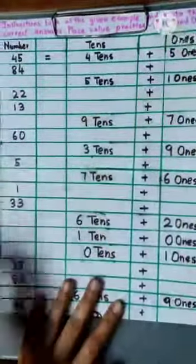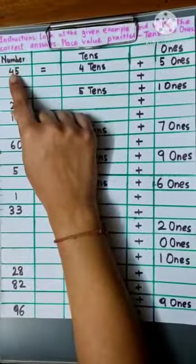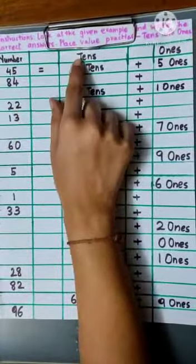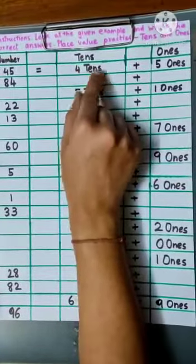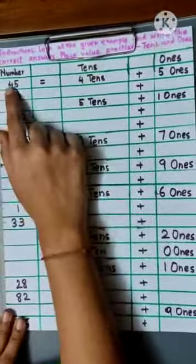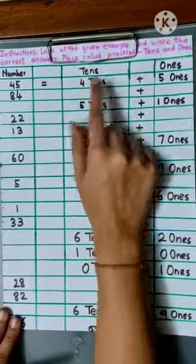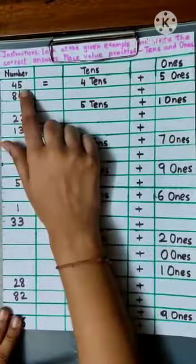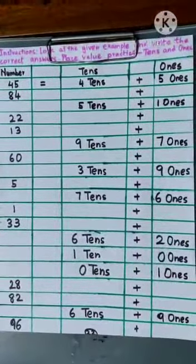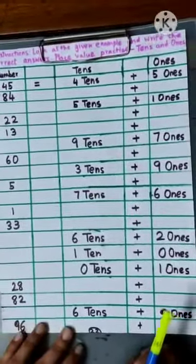In the first example, you can see there is number 45, and below tens there is 4 tens. In the tens column we have 4 tens, and in the ones column, 5 ones. 4 tens plus 5 ones make 45. Now we know how to solve the remaining worksheet.